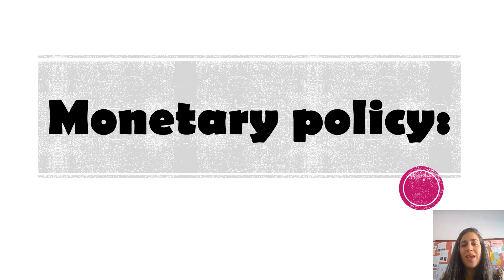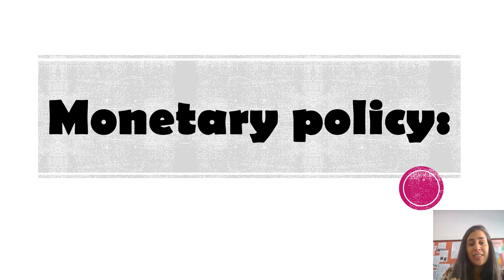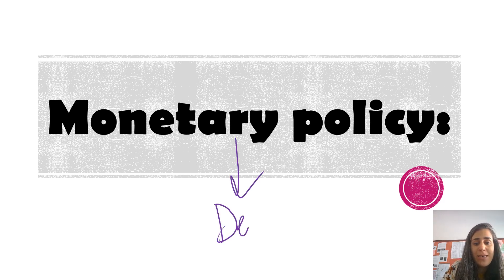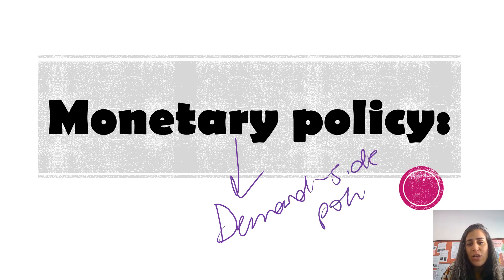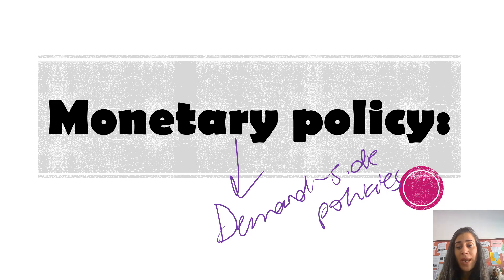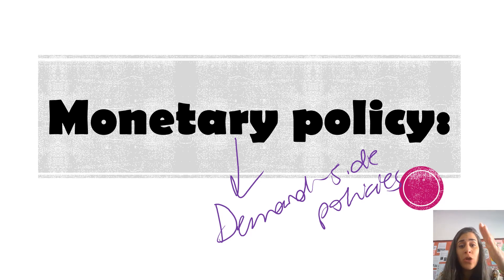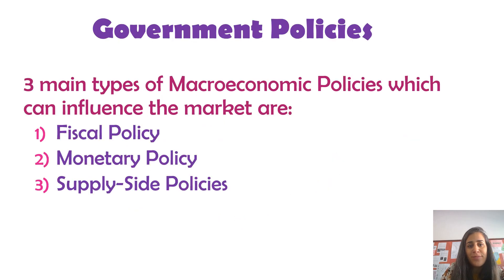Hello guys, welcome. Today we will be explaining monetary policy. This is under demand-side policies, so the government, when they want to achieve their objectives, they would want to increase or decrease aggregate demand, either by using fiscal policy, which we explained before, or by using a monetary policy.